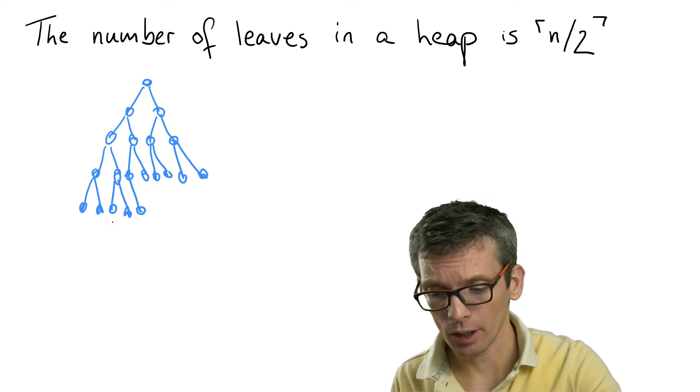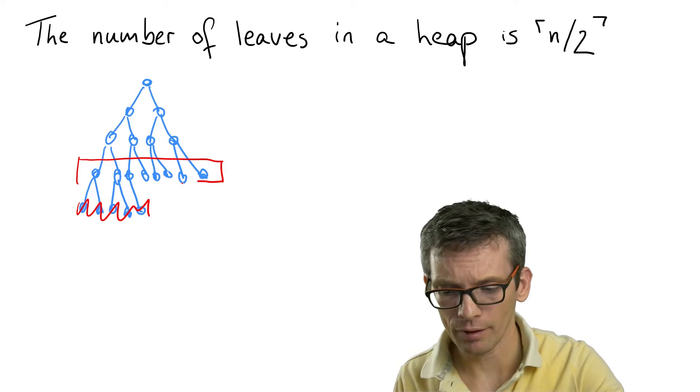So a heap is a nearly complete binary tree. Let's for the moment assume it's actually a complete binary tree. Let's ignore those nodes down there. So then these are the leaves.